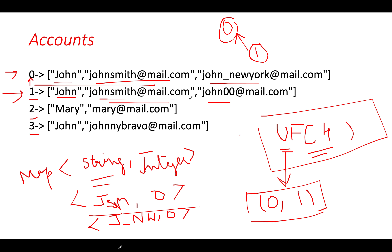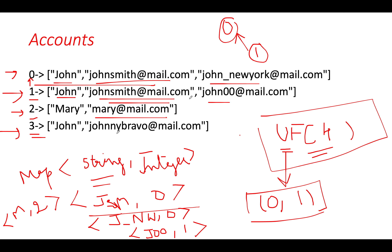Next, john00@mail.com (J00) doesn't exist in the map, so we add it with account ID one. Then mary@mail.com (M) is added with account ID two. Finally, johnnybravo@mail.com (JB) is added with account ID three. We have now iterated through all accounts and built the map appropriately.